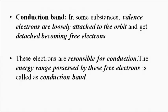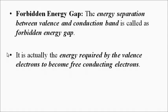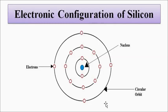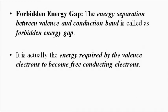When we discuss valence band and conduction band, it is necessary to also discuss the forbidden energy gap. The amount of energy required for the valence electrons to overcome the nuclear force of attraction and escape to become free electrons is called the forbidden energy gap. The valence electrons must overcome this energy barrier so they can escape and become detached free electrons, also called conducting electrons.